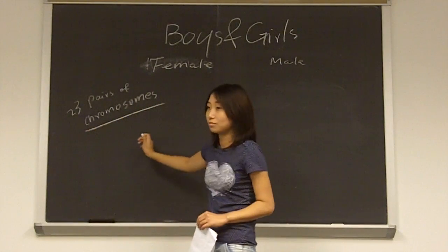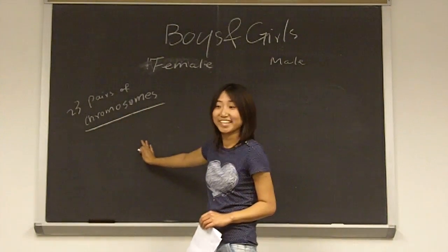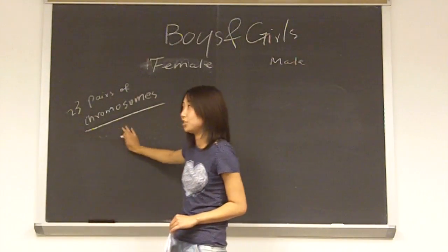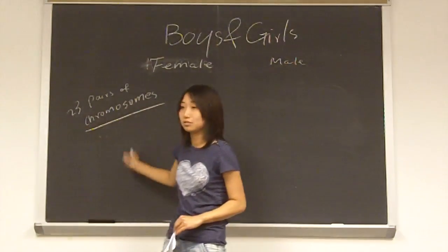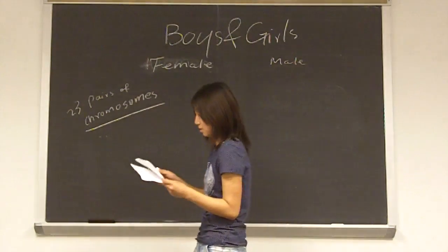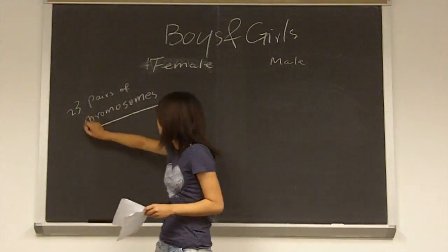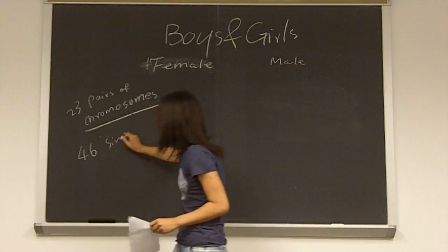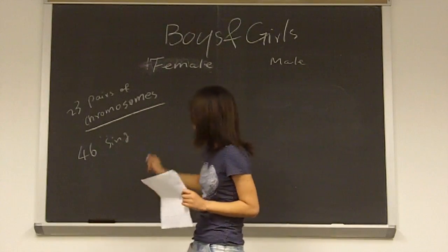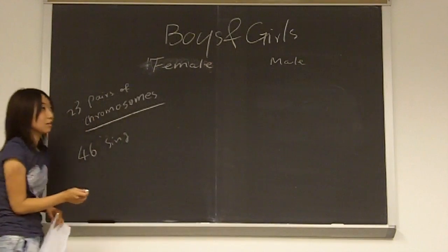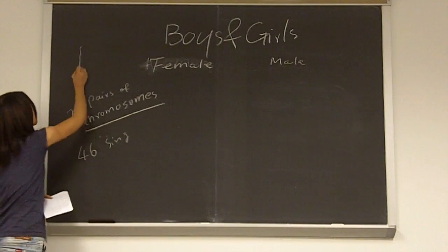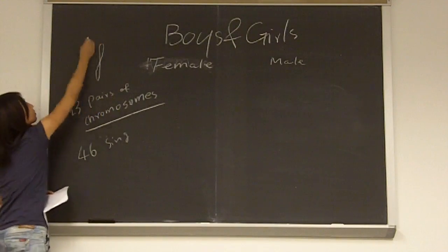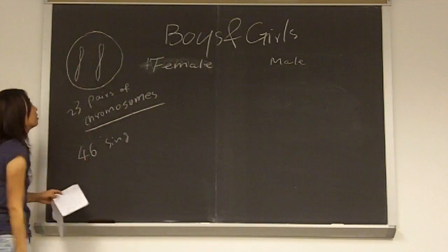So what is chromosome? Genetic material. Yeah, determining our genes. It contains the genetic information about our bodies. So 23 pairs of chromosomes give us 46 single chromosomes. And if you look at the microscope, you will see the chromosome is like this.